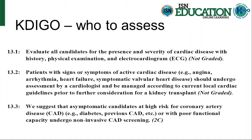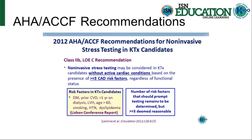We suggest that asymptomatic candidates at high risk for coronary disease — for example, people with diabetes, previous coronary artery disease, or poor functional capacity — undergo non-invasive coronary artery disease screening. This is graded 2C due to limited randomised controlled trial evidence. This is similar to the American Heart Organization 2012 recommendations, which suggest non-invasive stress testing may be considered in transplant candidates without active cardiac conditions based on the presence of greater than three risk factors — including diabetes, prior CAD, longer dialysis duration, left ventricular hypertrophy, older age, smoking, hypertension, and hyperlipidemia.